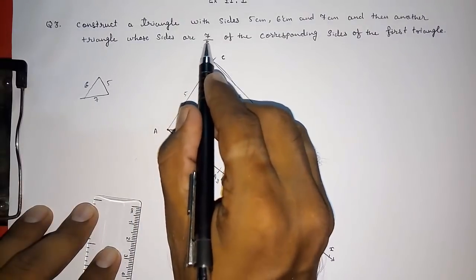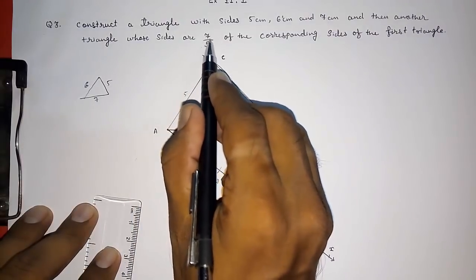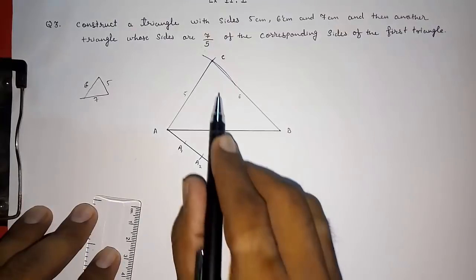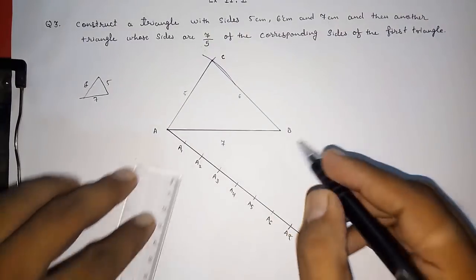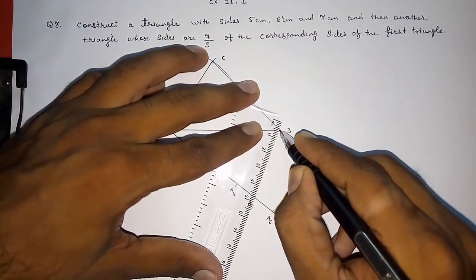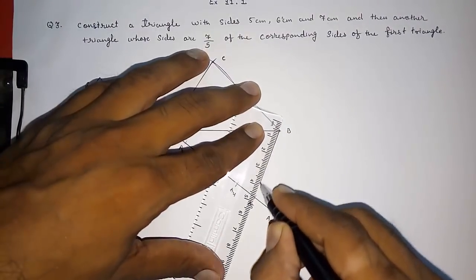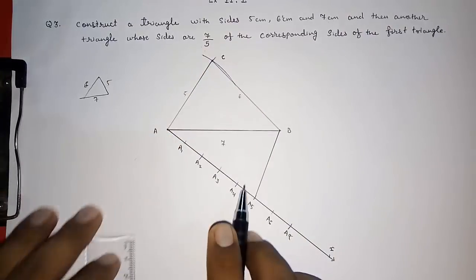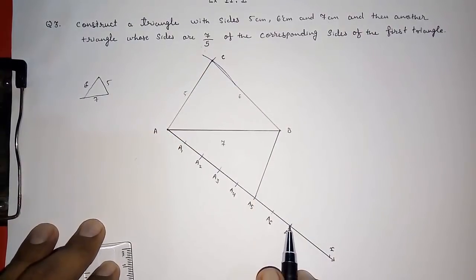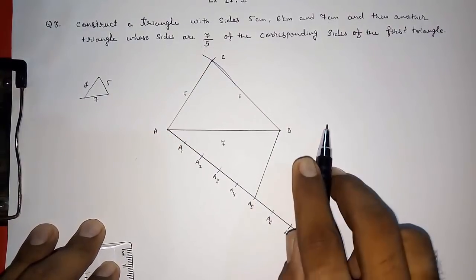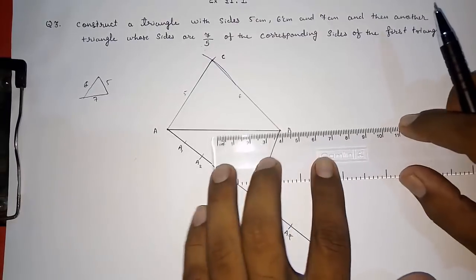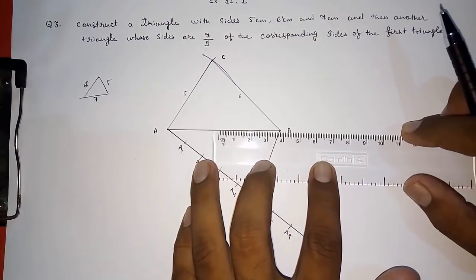Our given triangle is 5 parts and we have to construct one of 7 parts, so this is 5 parts. I'm going to join A5 to B. Now we have to draw a line parallel to A5B from A7, which will intersect the extended line — because it is in the exterior of the given triangle, we need to extend AB.